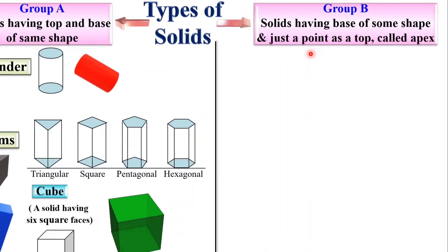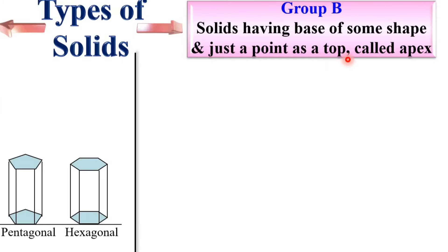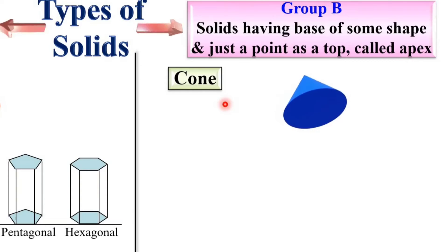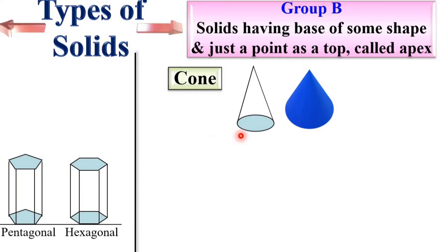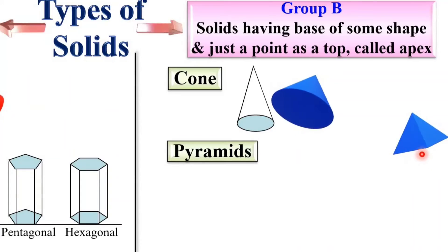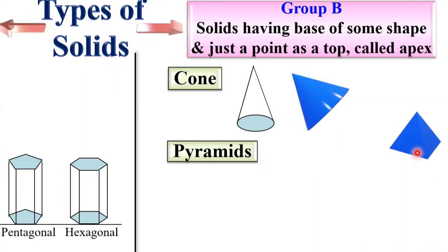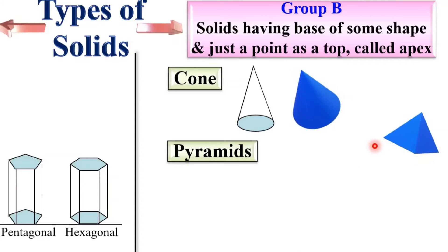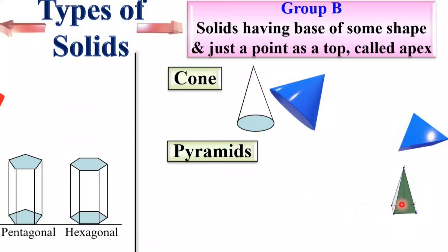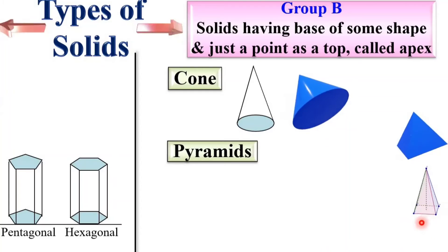Now consider Group B, where the bottom has a certain shape but the top is a single point known as the apex point. Consider a cone — the bottom is a circle and the top is the apex, so it is called a cone. Now for a pyramid, the base is a polygon and the top is the apex. In case of pyramid, the bottom is always a polygon and the top is the apex. For example, if the base is a square, it is called a square pyramid.